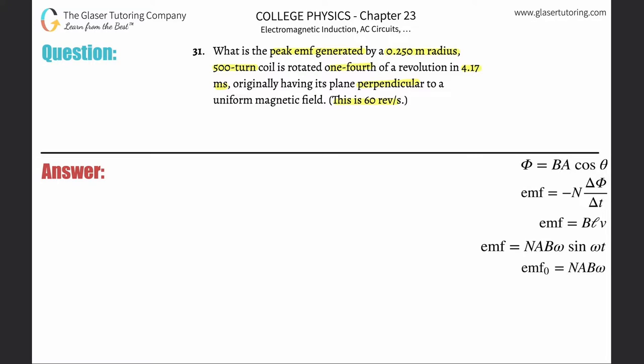By the way, this is 60 revolutions per second. I could have taken this information—one-fourth of a revolution—and figured out the angular velocity in radians per second. Check out problem number 30 if you want to see how to do that conversion. In this case, I'm just going to do a conversion because they were nice enough to give it to us.